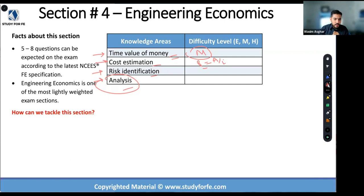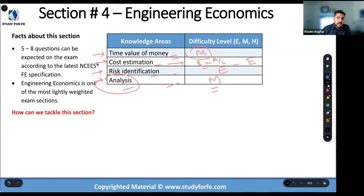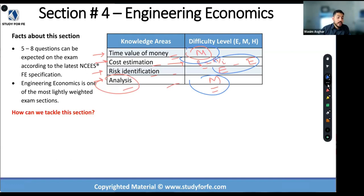Cost estimation is fairly easy — you just have to identify that the problem involves capitalization. Risk identification covered the decision tree, which is also easy. Analysis is medium because it's encompassing. Looking at this section overall, about half is medium and half is easy, which is why we dedicated two full sessions — an entire Saturday and Sunday — to engineering economics. It deserved that respect given the wide range of topics, including bonds, taxes, and internal rate of return.